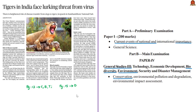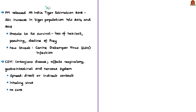The next article discusses the threat of canine distemper virus (CDV) spreading from dogs living near wildlife sanctuaries to tigers. On International Tigers Day — 29th July 2019 — the Prime Minister released the All India Tiger Estimation 2018 results, showing the tiger population increased by 33% between 2014 and 2018, reaching 2,967 tigers. While habitat loss, prey decline, and poaching have long threatened tigers, a new threat has emerged: canine distemper virus.